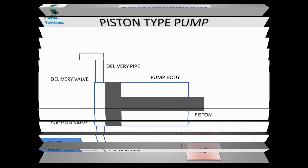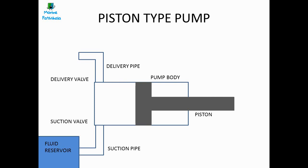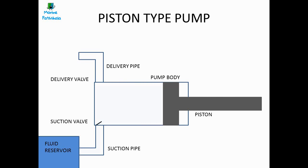Now let us understand a simple piston type positive displacement pump and how it works. The main parts are the piston and pump body — the piston moves inside the pump body. The piston moves back and creates a vacuum inside the pump body, and fluid from the reservoir is sucked into the pump through the suction pipe and valve.